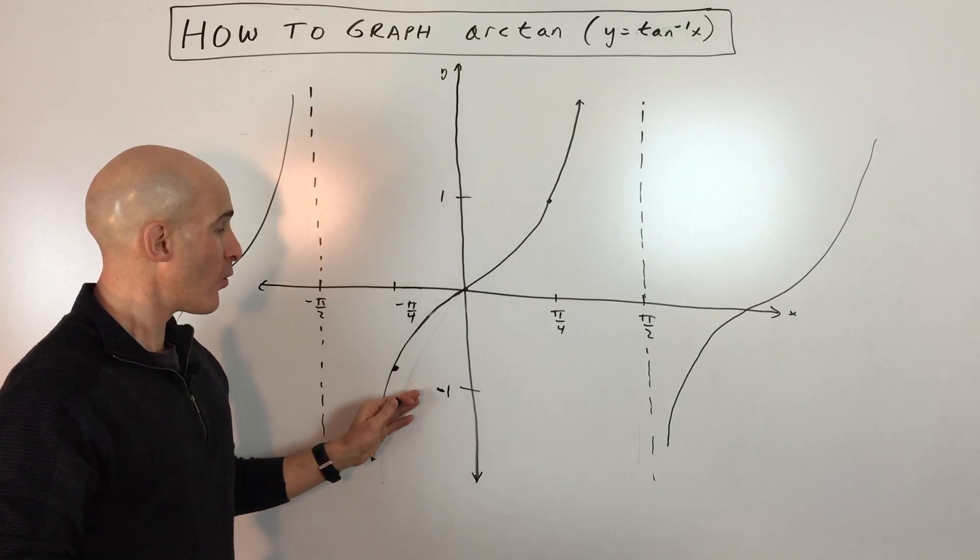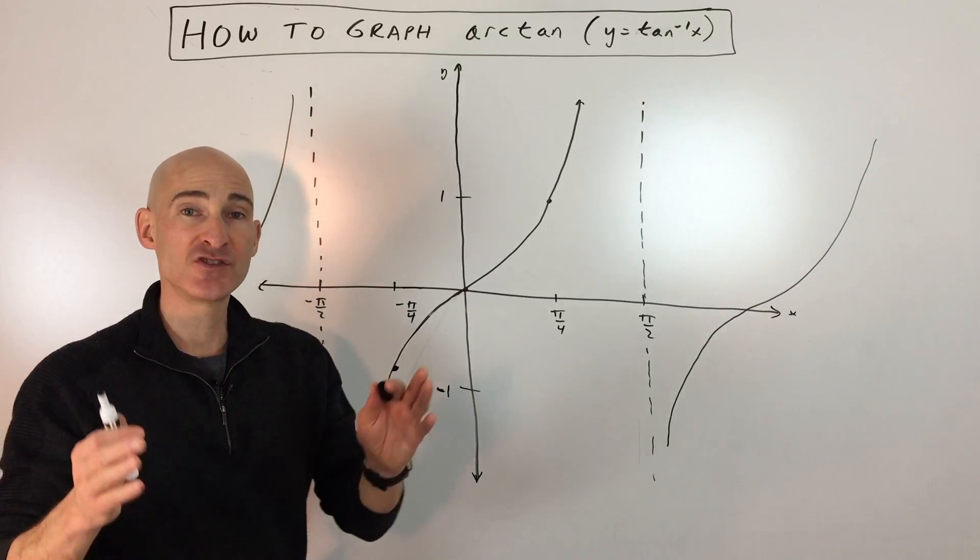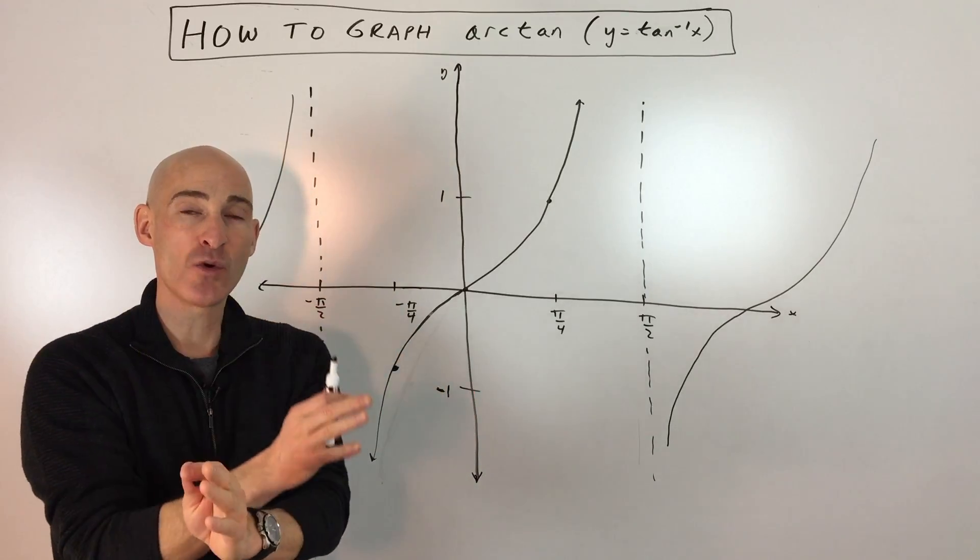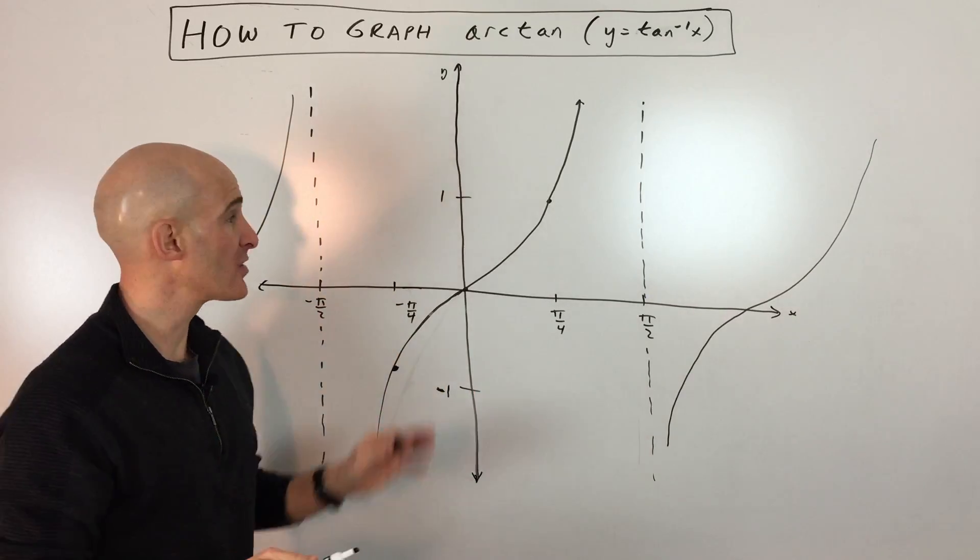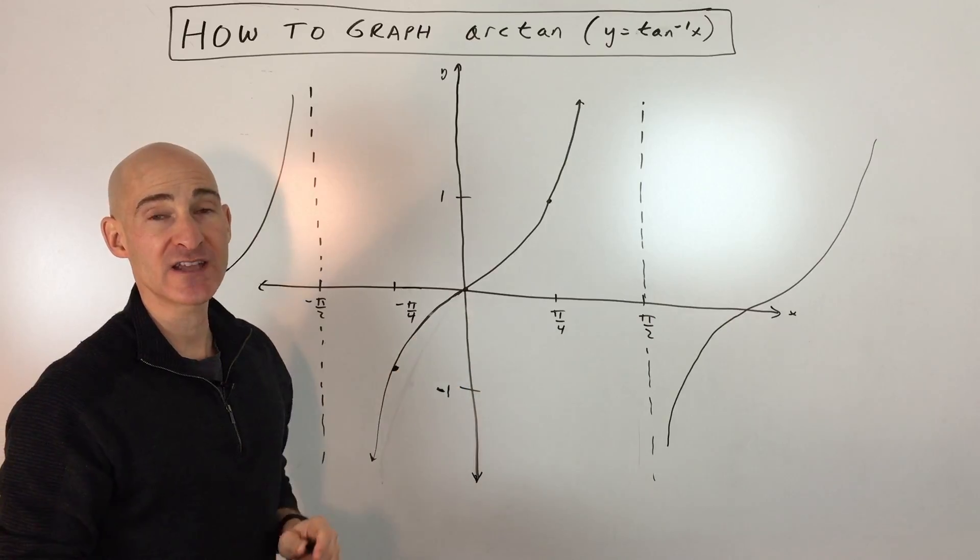So what we're going to do here when you find the inverse of a graph is you interchange the x and the y values, or the x and the y coordinates, and that's what we're going to do here to get the graph of arctangent.